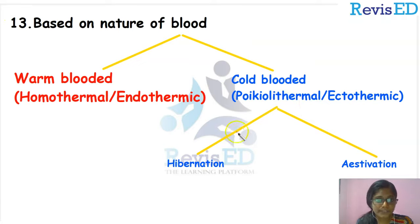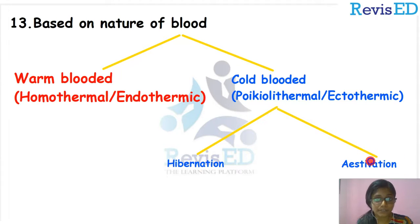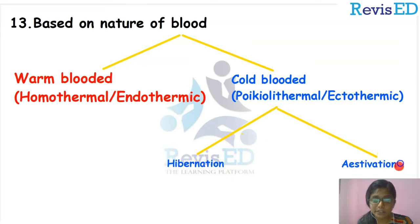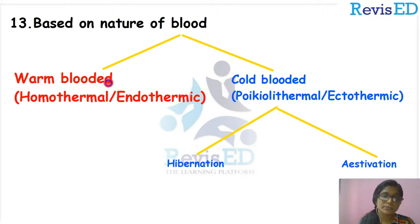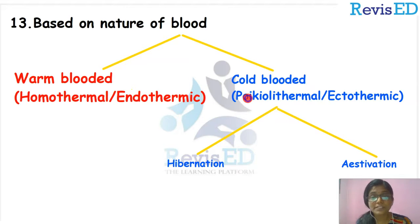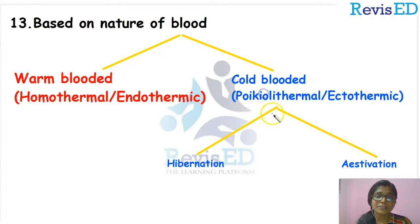Cold-blooded animals are also known as poikilothermic animals or ectothermic animals. There are two more adaptations in cold-blooded animals — hibernation and estivation. Hibernation is known as winter sleep and estivation is known as summer sleep. Cold-blooded animals perform hibernation or estivation to adapt to temperature changes.